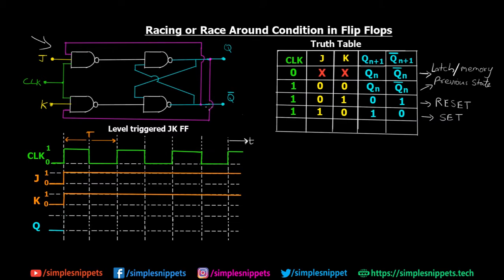A toggle state is basically a controlled state, which means we can use that state, and it is used many times in counters and other circuits. However, that only happens when there is edge triggering. When it comes to level triggering, the same toggle state is now becoming a race state or race condition, and we'll see how that happens.